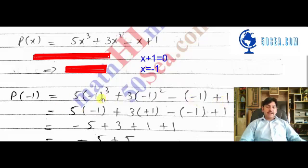This is P of negative 1 equals 5 times negative 1 cubed plus 3 times negative 1 squared minus negative 1 plus 1.